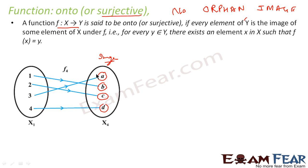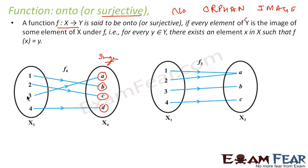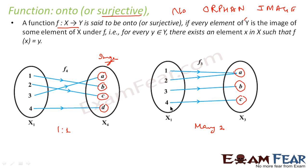One more example: this function is one-one, and this function is many-one — because for A there are two injections coming in. But it is still onto, because for A, B, and C there are some elements. For every image you have some elements — there is no orphan image.